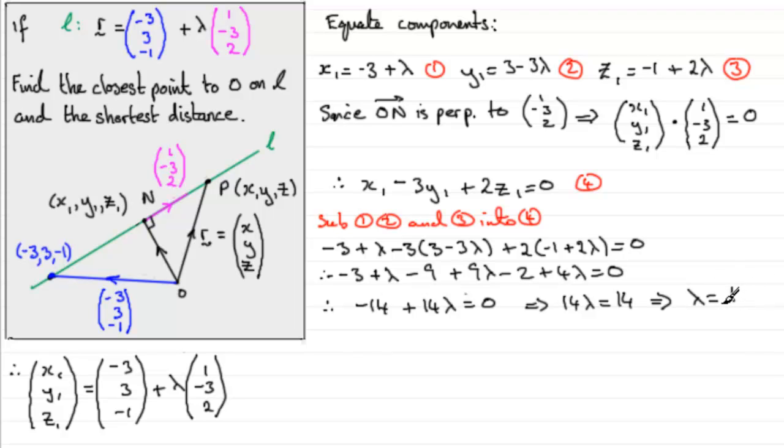Now that we've got lambda equals 1, we can sub this back into 1, 2, and 3, and get our values for x1, y1, and z1. So if we do that, we end up with N having coordinates x1, which will be -3 plus 1, that's going to be -2. As for y1, it's going to be 3 minus 3, so that's 0. And then for z1, we've got -1 plus 2, which is going to be 1. So our coordinates then for N are (-2, 0, 1).